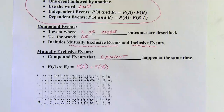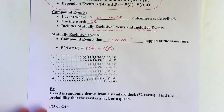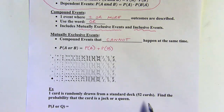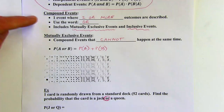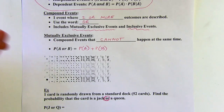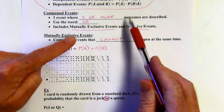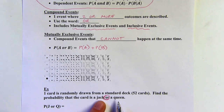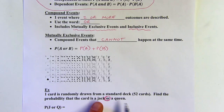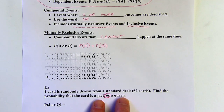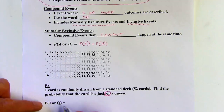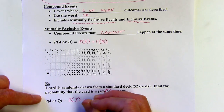Example: one card is randomly drawn from a standard deck. Find the probability that the card is a jack or a queen. The word 'or' signals a compound event. This is mutually exclusive because if you draw one card, it could be a jack or a queen, but not both at the same time. So we add the two probabilities together.